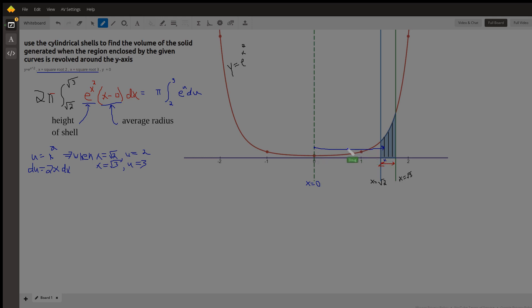And so the length of that average radius is the x coordinate at the right, which is just an x, minus the x coordinate at the left, which is always a 0. So that's what this is here, the average radius. And now it looks like we could use u substitution to evaluate this definite integral.